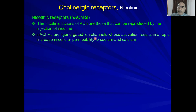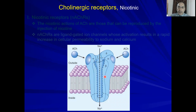Nicotinic receptors are ligand-gated ion channels. Acetylcholine is the ligand that binds to the gate. When acetylcholine binds to the nicotinic receptor, the receptor undergoes a conformational change and allows the passage of ions like sodium and calcium. This can lead to an action potential or a parasympathomimetic action on certain effector organs.